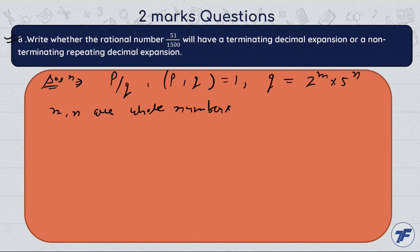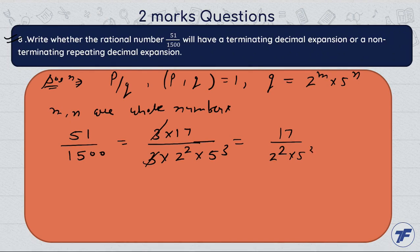Clear here. Apply the same result here. We have a rational number 51 upon 1500. Prime factorization: 3 times 17 and 3 times 2 power 2 times 5 power 3. So 3 cancels out and we get 17 upon 2 power 2 times 5 power 3.